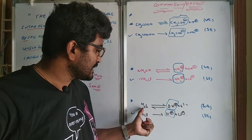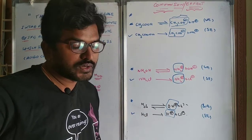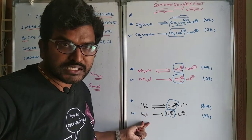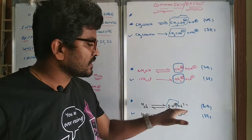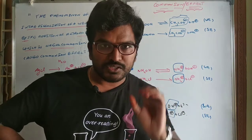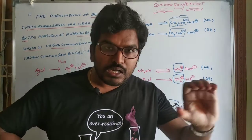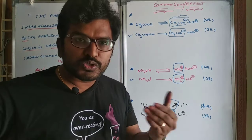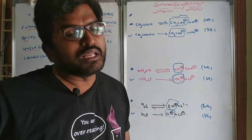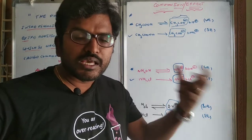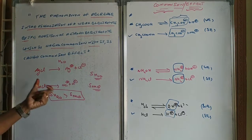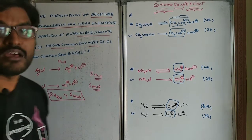The second group reagent is H2S used in presence of HCl. Whenever you add H2S in presence of HCl, the H⁺ ions decrease the concentration of sulphide ions. So only second group cations are precipitated. Fourth group cations are stopped because fourth group cations have a maximum solubility product, while for second group cations the solubility product is minimum. I will explain these applications in a different video.